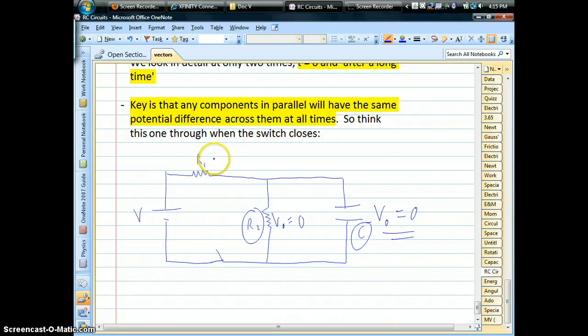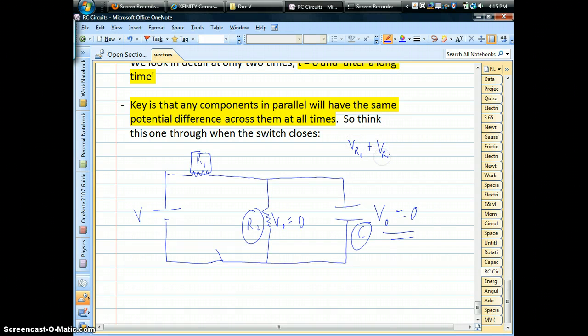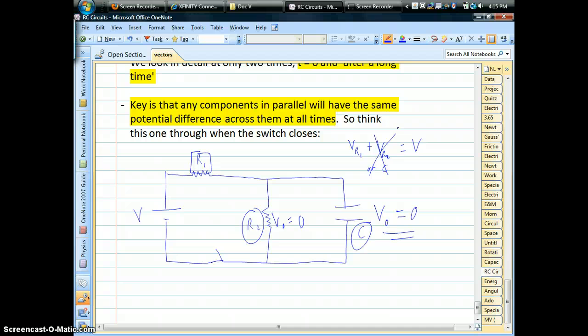all of that voltage ends up on R1. Because remember, the voltage of R1 plus the voltage of R2 or the capacitor, since those are in parallel, has to be equal to the voltage of the battery. So if the voltage on the resistor 2 and the capacitor are zero, then all of the voltage goes to R1 at least at that one instant.